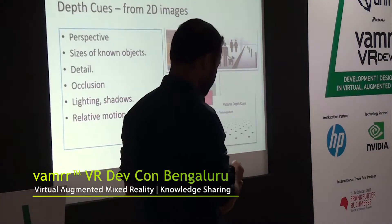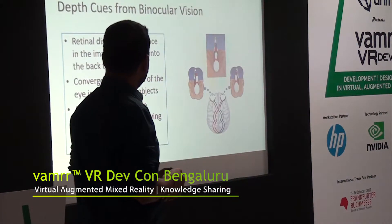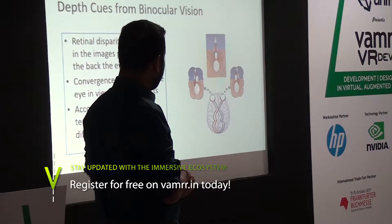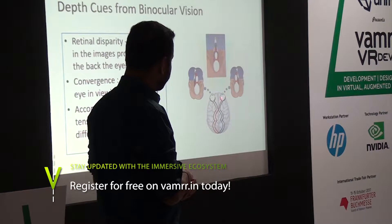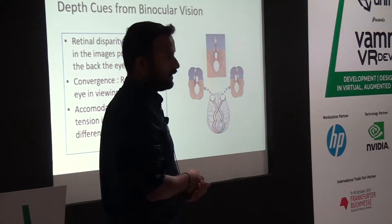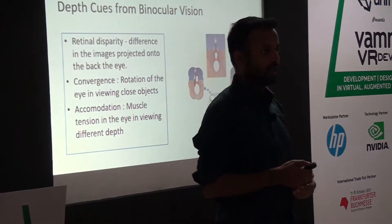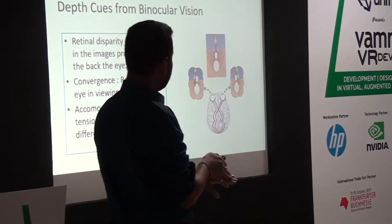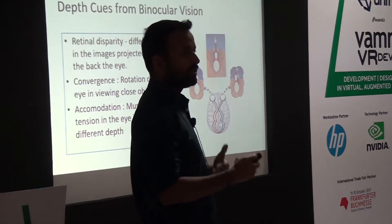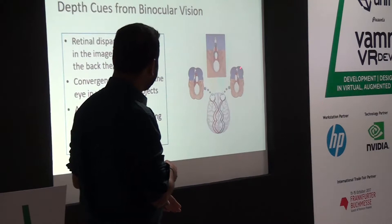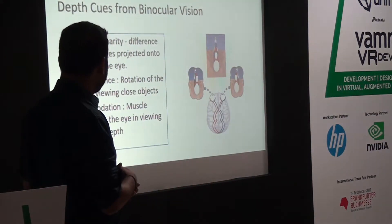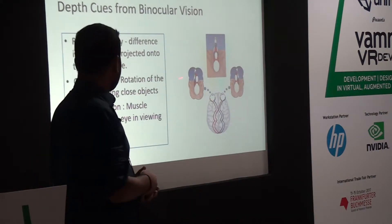These are all depth cues from binocular vision. You can see this pinball — when seen from the left eye it looks one way, and from the right eye it looks different. These are two different images called a stereo pair or stereo images. When they form on your retina, the brain interprets depth from the difference between the two images — this is called retinal disparity.